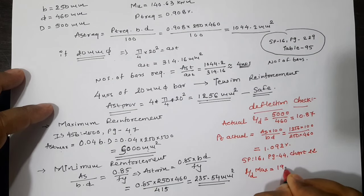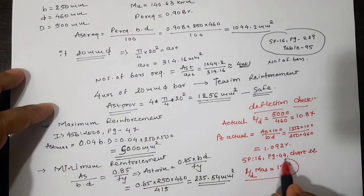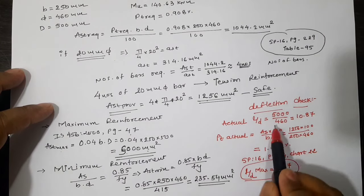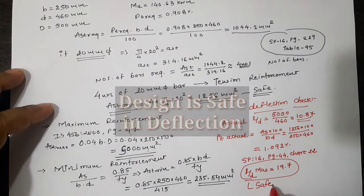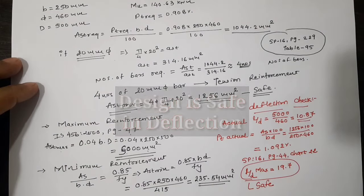Now using SP16 page 44, graph or chart number 22, we have maximum L/d value as 19.87. Now our maximum value is greater than the actual value, it means our design is safe in deflection. Thank you.